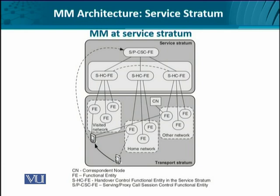In this diagram, you can see the transport stratum doing its job, while the service stratum has certain mobility management related entities. For instance, we have the serving and proxy call session control function elements, and the handover control functional entity. These interact with the transport stratum and the user equipment, or both, depending on the requirement. The user equipment — shown here through the mobile phone icon — is interacting not only with the transport stratum but also with the call session control functional element at the same time.